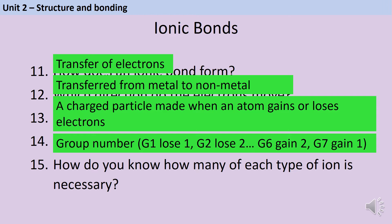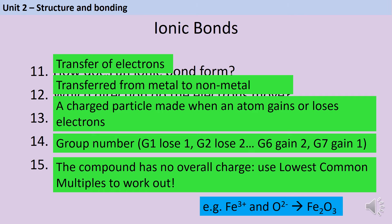In order to work out how many of each ion is necessary in a compound, you need to compare the charges so that overall you have the same number of positive and negative charges. The easiest way to do this is by looking for lowest common multiples. For instance, if you have iron(III) (Fe³⁺) and oxygen (O²⁻), the lowest common multiple of three and two is six. To get six positives you'll need two iron ions, and to get six negatives you'll need three oxygen ions, giving us Fe₂O₃.